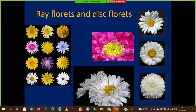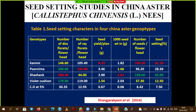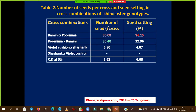In Gerbera — which is also from Asteraceae — the ray florets are pistillate and disc florets are hermaphrodite, same as other Asteraceae. However, in Gerbera there are also transversal florets — small petals in an intermediate circle — where only pollen (male part) is present. This is the exception in Gerbera: transversal florets containing only pollen.